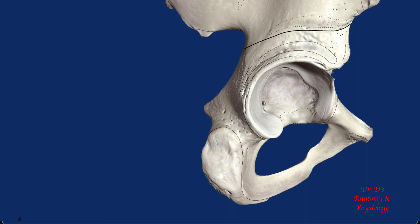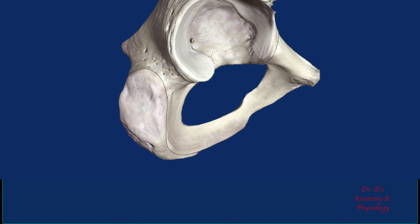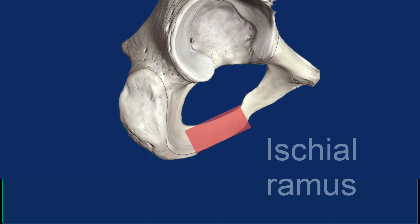There is a rough surface on the ischium which is the part of the bone that comes into contact with any surface that you sit on. The rough surface is due to the attachment of muscle tendons at this location. Rough surfaces on bones are called tuberosities, and this tuberosity is the ischial tuberosity. Projecting from the ischium and fusing with the inferior ramus of the pubis is the ischial ramus.